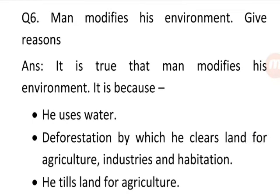Question 6: Man modifies his environment — give reasons. Answer: It is true that man modifies his environment. He uses water and practices deforestation by which he clears land for agriculture, industries and habitation. He tills land for agriculture, uses air, and performs numerous activities to make life comfortable.